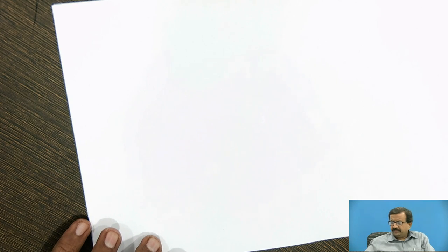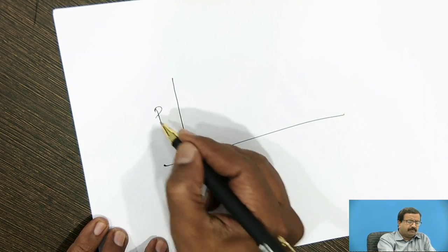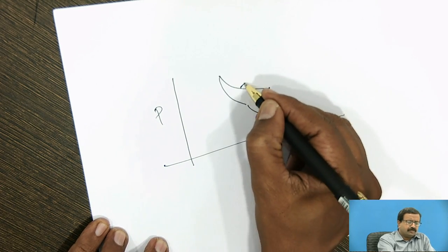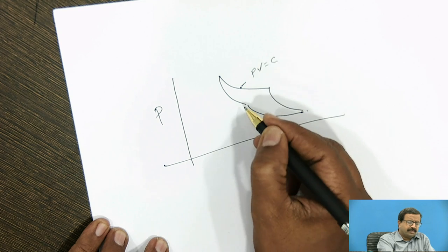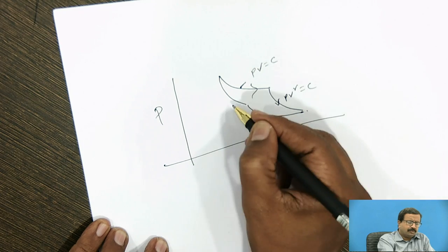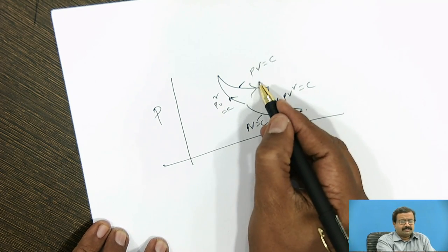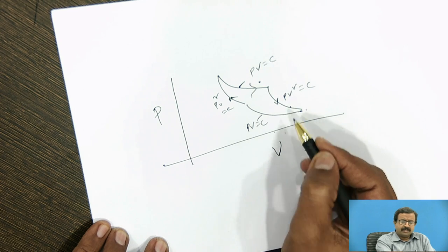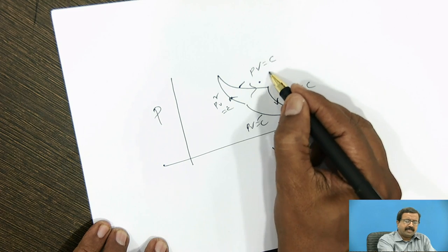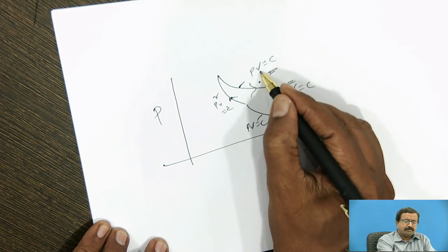Third point is the Carnot cycle. If you draw it on the PV diagram, you will find that it consists of four cycles. This is PV is equal to constant and this is also PV is equal to constant. This is PV raised to gamma is equal to constant and this is PV raised to gamma is equal to constant. This is isothermal expansion followed by adiabatic expansion, isothermal compression followed by adiabatic compression. You know that isothermal is a very slow process, adiabatic is a very fast process. So coupling of slow and fast is impossible.